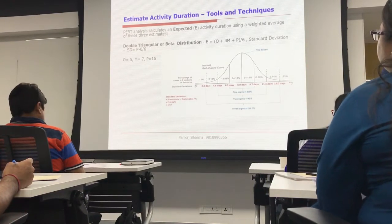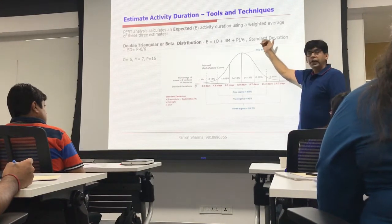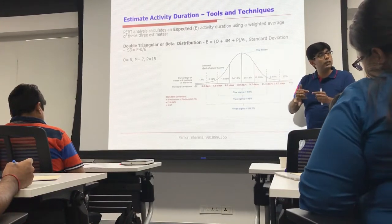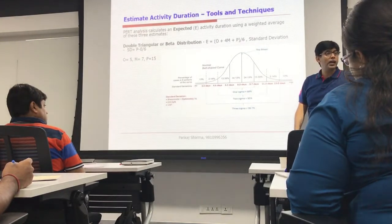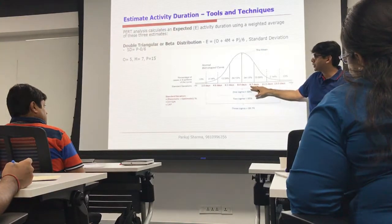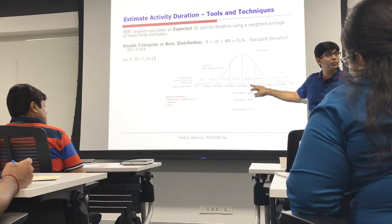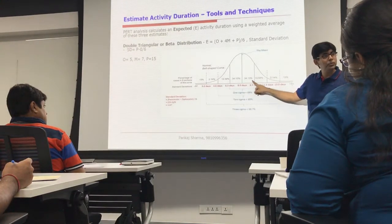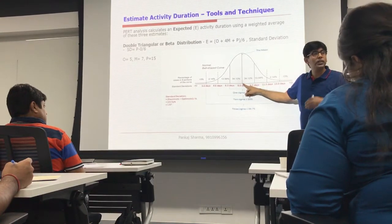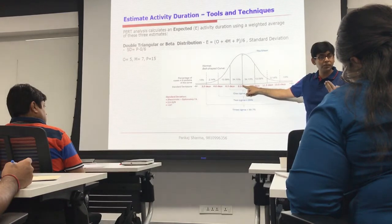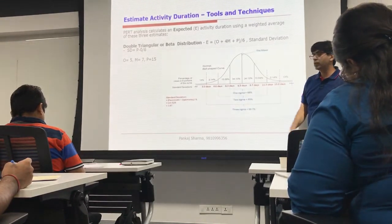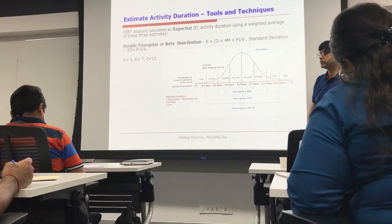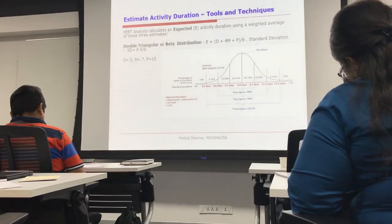Can you again explain how you got from 8 to 9.7 and 6.3 days? Absolutely. The expected value of time is 8 days. The standard deviation is 1.67. If I go 1 sigma higher, that is 9.67, which approximates to 9.7 days — that is the mean to plus 1 sigma range. Similarly, if I go on the left side of the mean, 8 minus 1 sigma equals 6.3 days. The range of 6.3 to 9.7 days represents 68%.